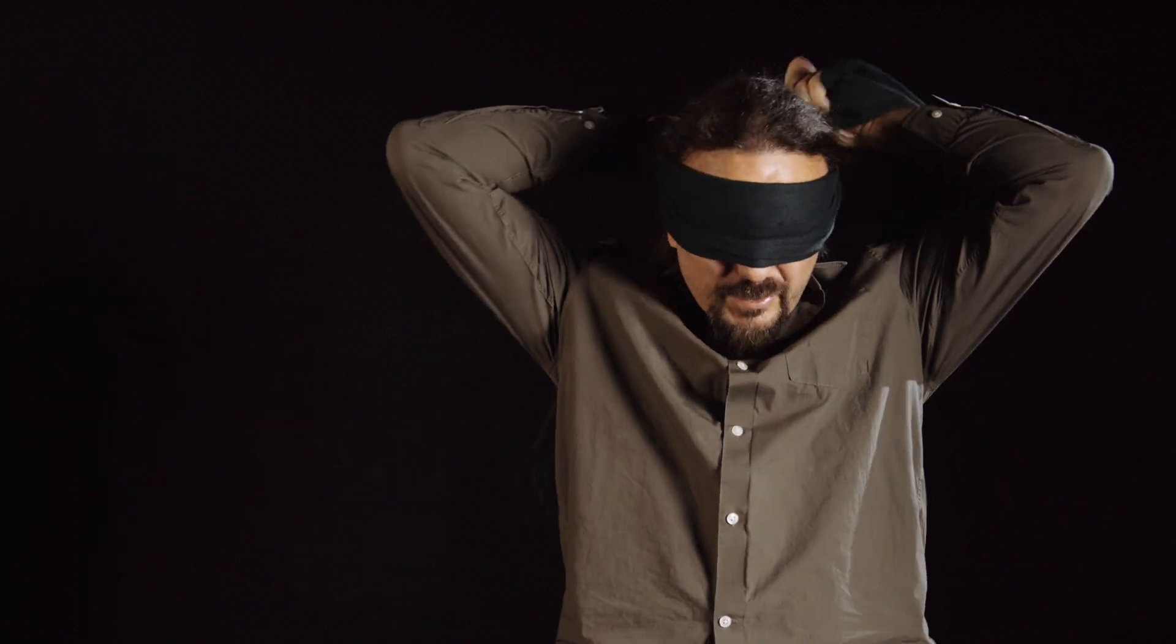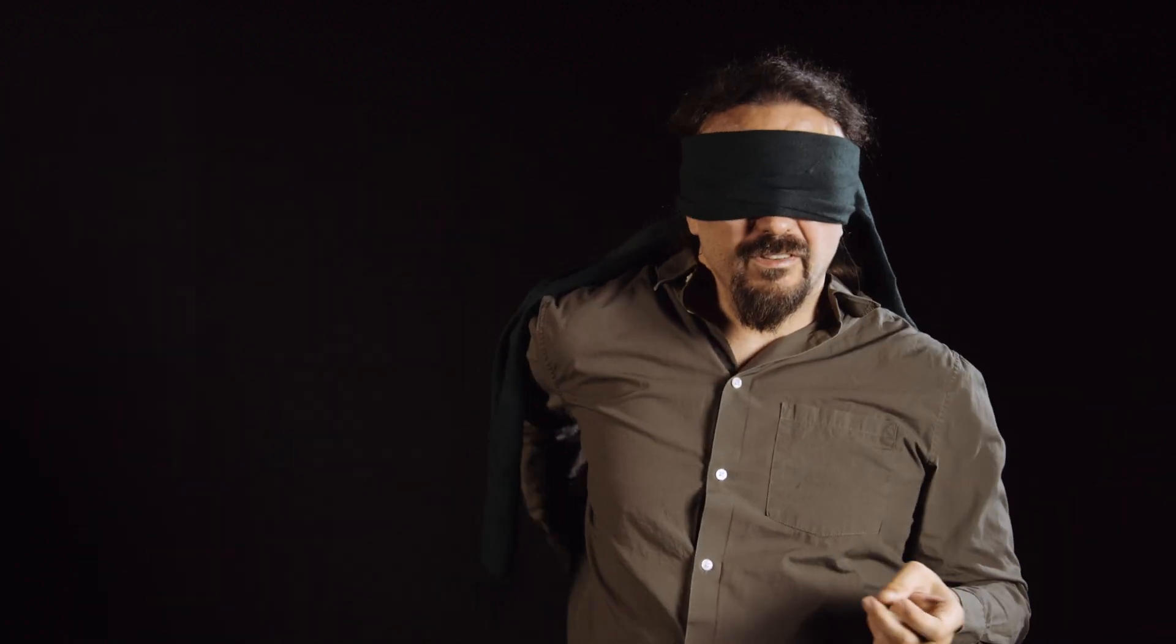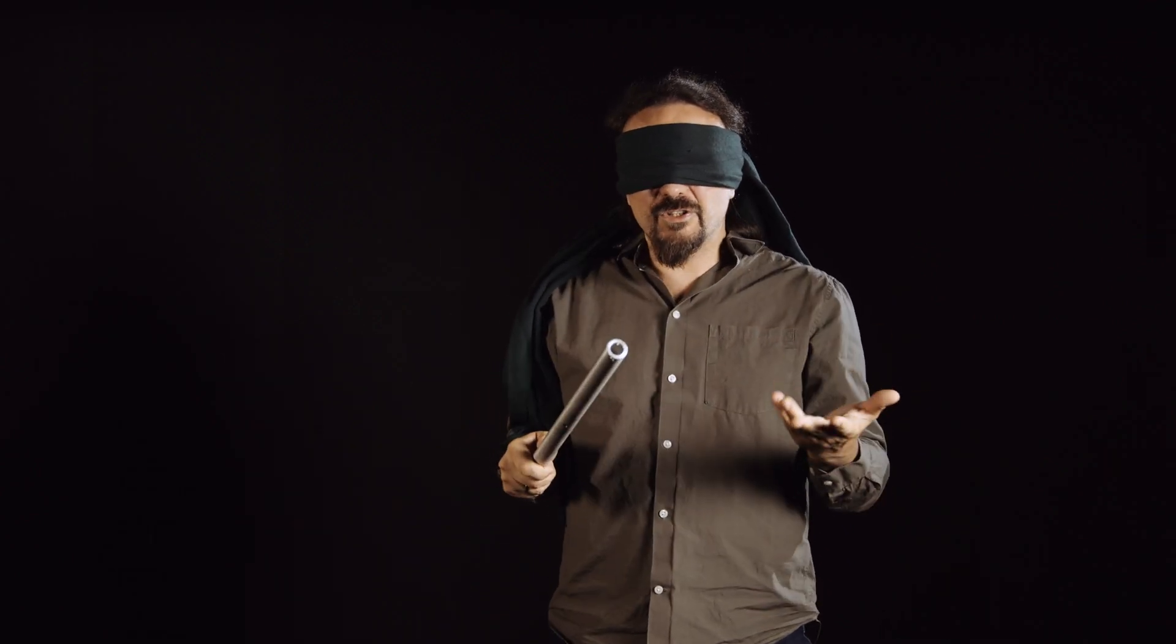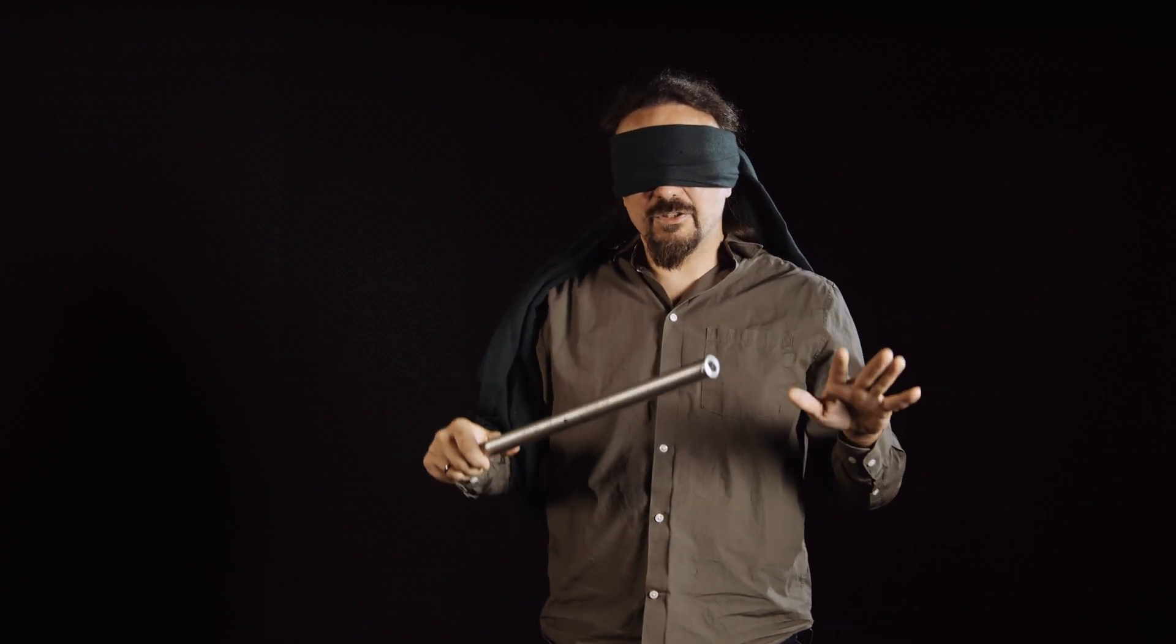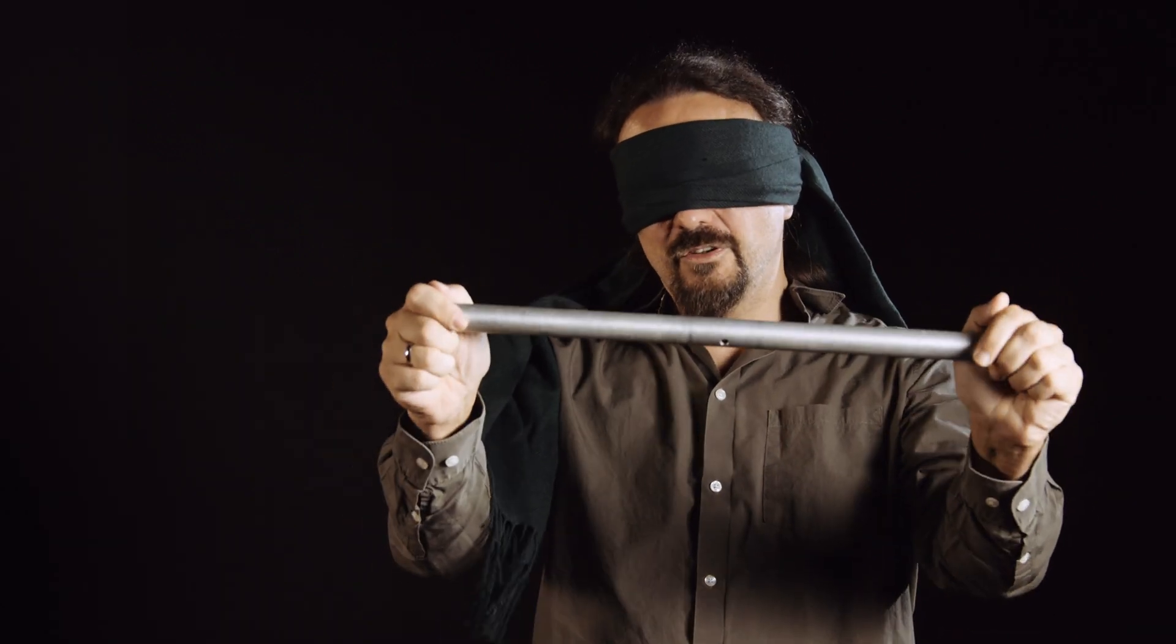Trying to measure the mass of the W boson is like trying to measure the length of a stick blindfolded and holding it with only one hand, as opposed to trying to measure the mass of the Z boson, the other particle that transmits the weak interaction, which is like trying to measure the length of a stick by holding it at both ends with both hands.